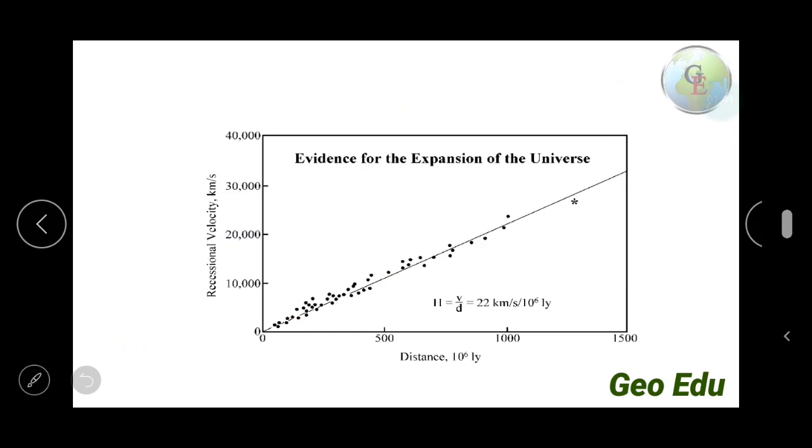He plotted the recessional velocity against the distance. The velocity in which the galaxies are moving apart from one another. He plotted, and he has taken into account more than 50 galaxies, and he got one straight line.